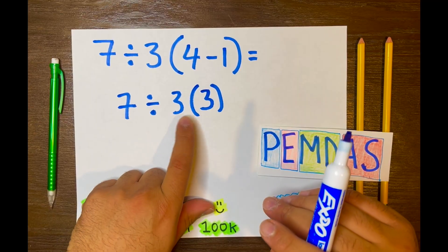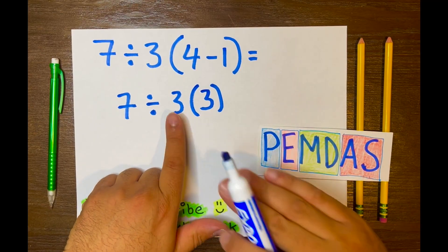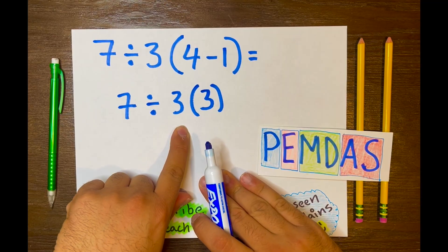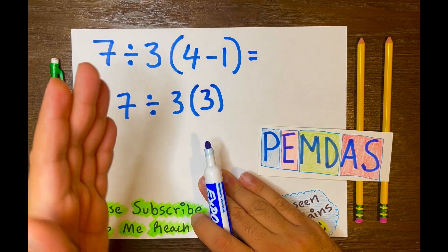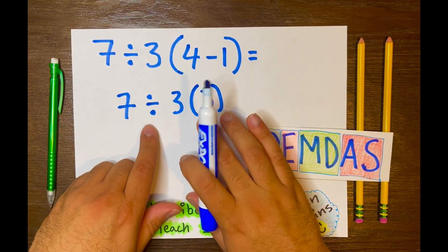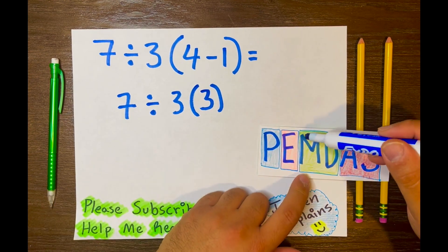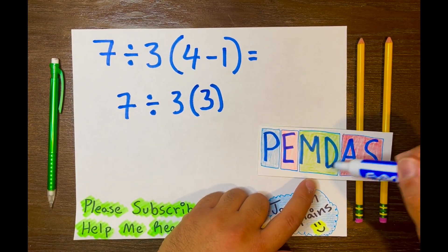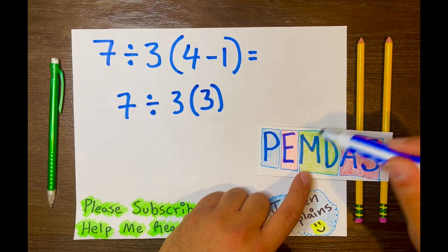Not 3 times 3. 3 times 3 is a no-no. 7 divided by 3 will go first because we are reading from left to right, right? And we know both operations are within this level, MD. And that's the next level.